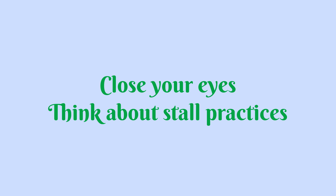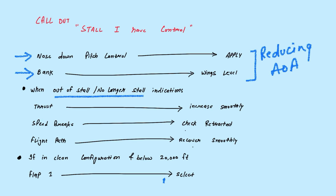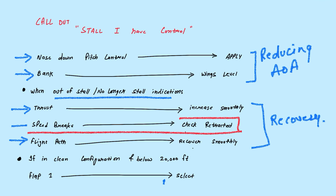Once you have reduced the angle of attack and you are out of stall, you increase your thrust smoothly and recover your flight path. Let me break down the memory item: nose down pitch control apply, wings level — you are doing nothing but reducing the angle of attack. Then increasing your thrust and recovering your flight altitude and flight path is the second step. There is one additional step: speed brakes check retracted, because in trainer aircraft you don't have speed brakes — here you have spoilers on the wings and you are checking they should be retracted.